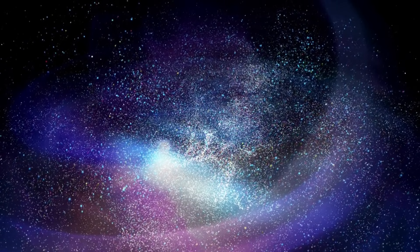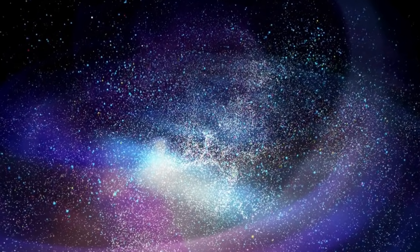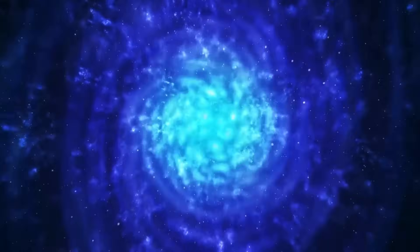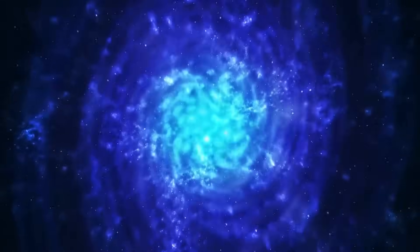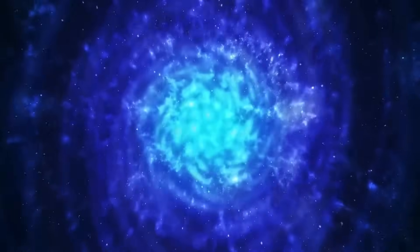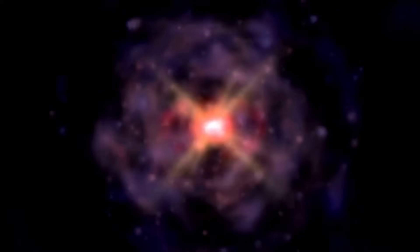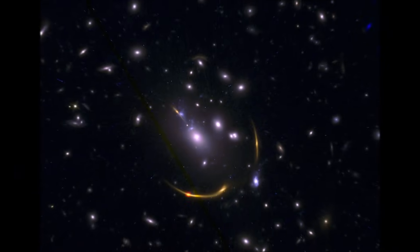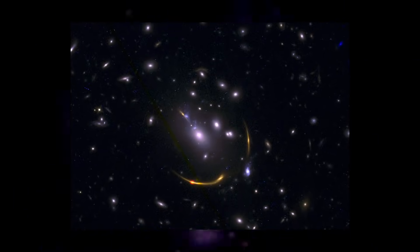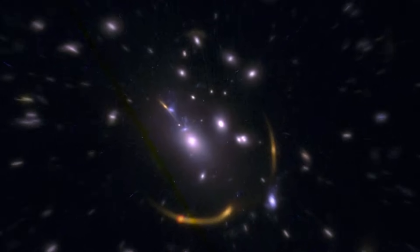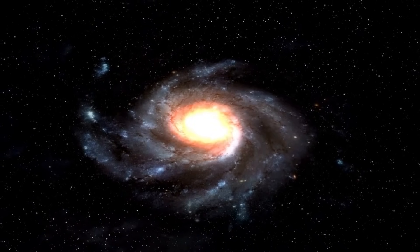According to this model, the universe undergoes periods of expansion followed by contraction, with a big bounce event marking the transition between each cycle. This theory could potentially explain the presence of massive galaxies at such an early stage in the universe's history as remnants from a previous cosmic cycle.